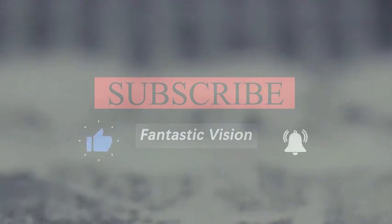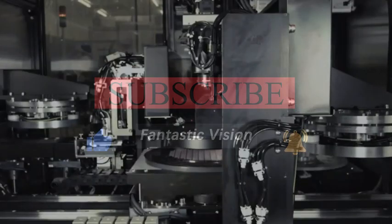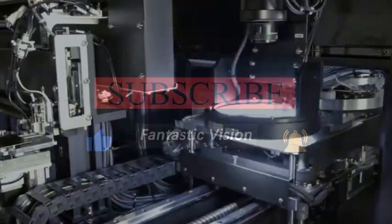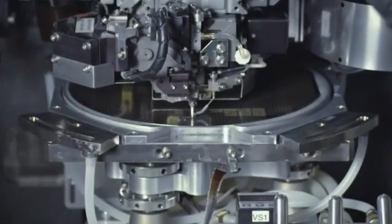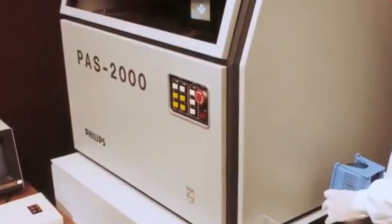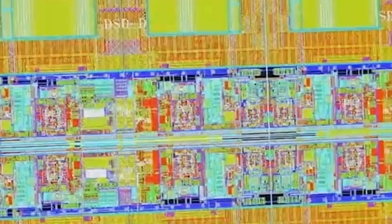When the Mate 60 was released, many people were speculating whether the Kirin 9000 chip reached the 7nm level. When the Pura 70 series was released, many people were speculating whether the Kirin 9000 chip had a 5nm process level.